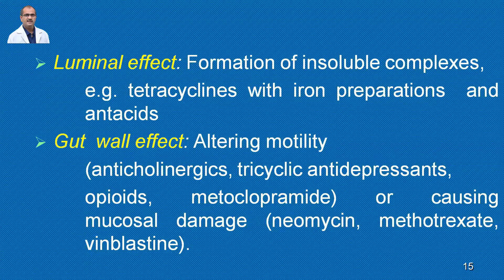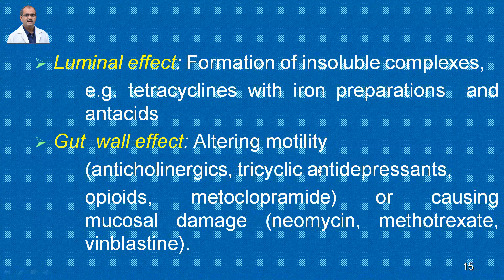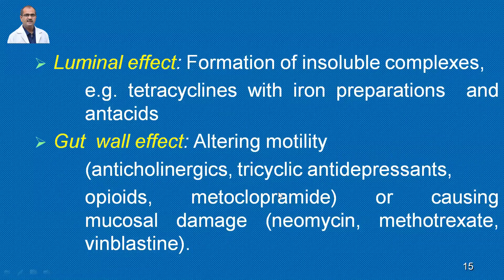For example, drugs like anticholinergics such as atropine sulfate, tricyclic antidepressants — which many persons take every day — and opiate drugs given chronically, as well as metoclopramide, a dopaminergic receptor agonist, all affect gut motility.